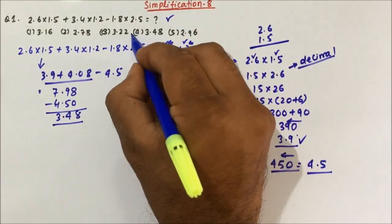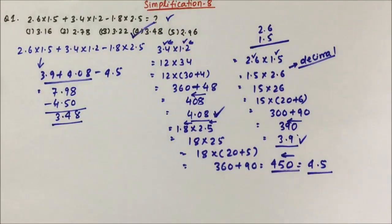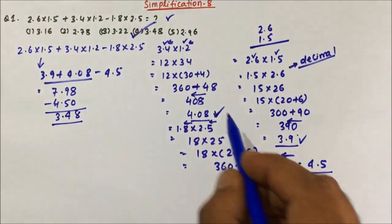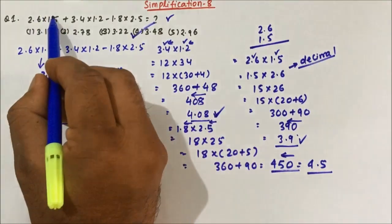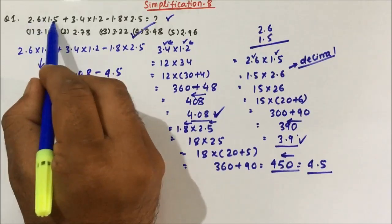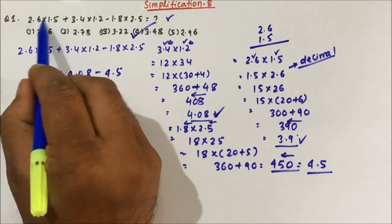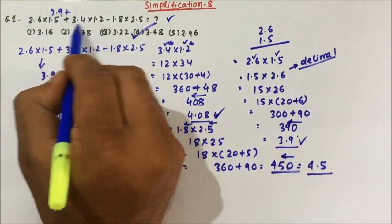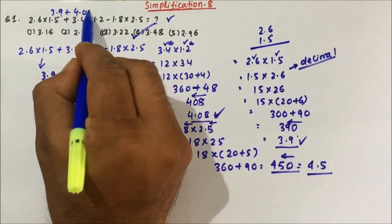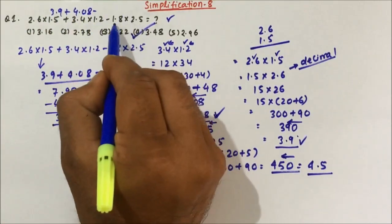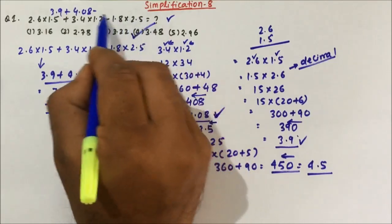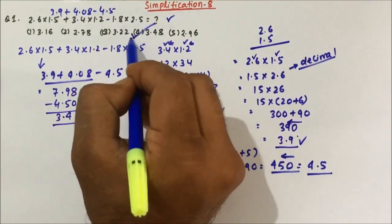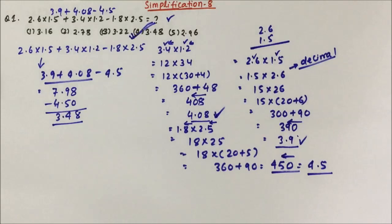So 3.48, option 4, is the correct answer. To summarize the fast method: 15 × 2 = 300, plus 90 = 390, two decimals gives 3.9; then 360 + 48 = 4.08; then 18 × 2 = 36, plus 90 = 450, gives 4.5. Directly: 3.9 + 4.08 − 4.5 = 3.48. This trick lets you solve multiplication questions in seconds.